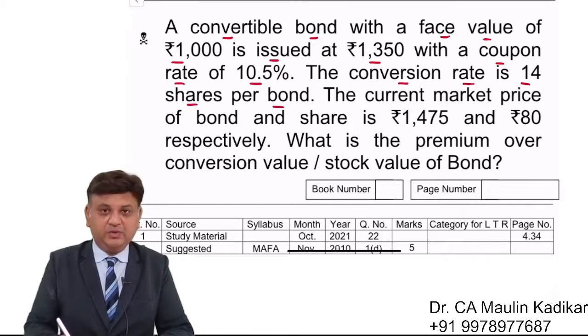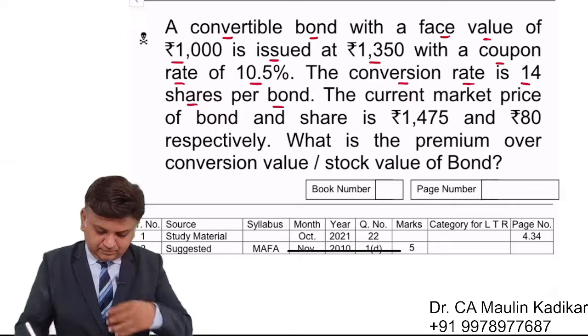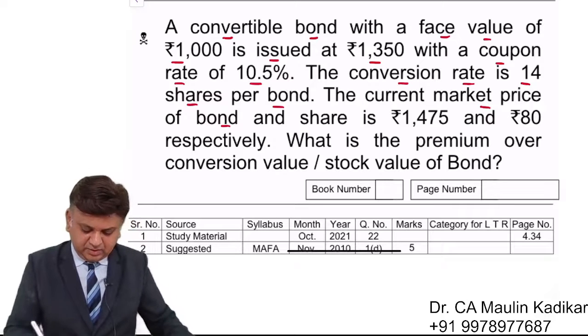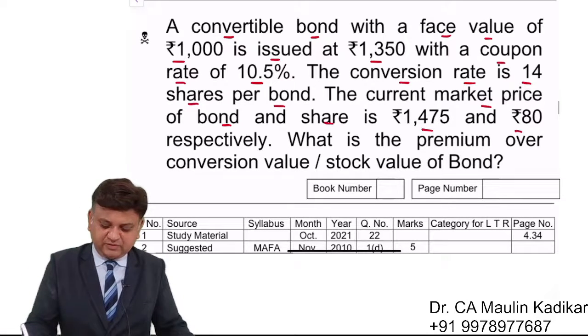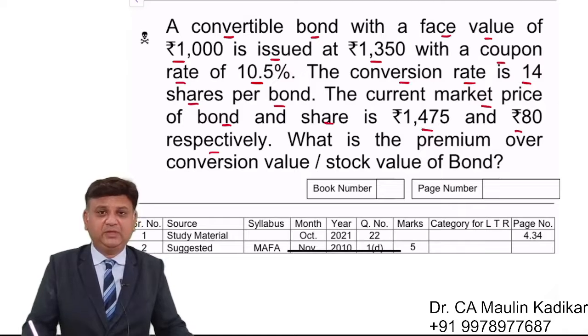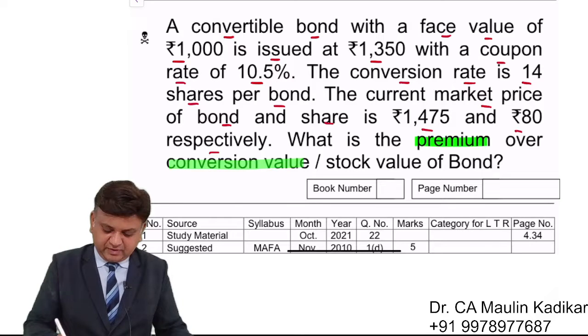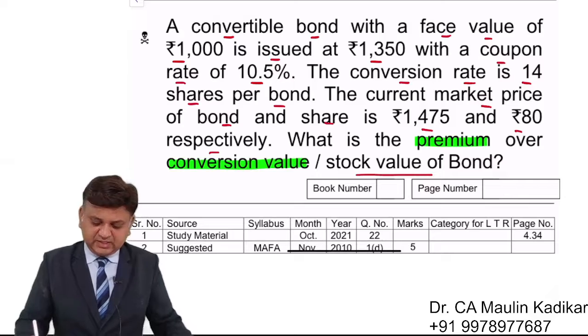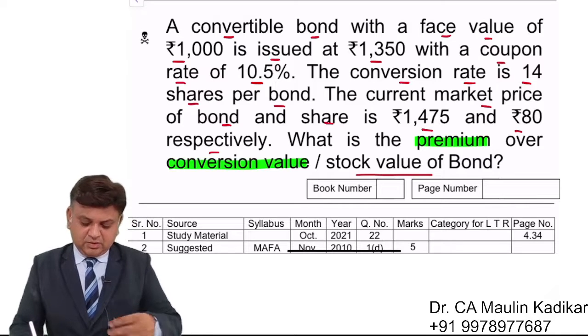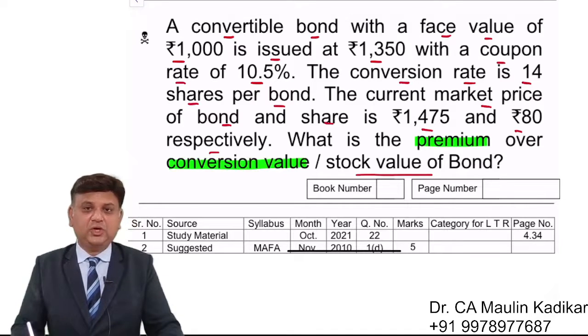Conversion rate is 14 shares per bond. The current market price of the bond and the share price is Rs.1475 and Rs.80 respectively. What is the premium over the conversion value or what is the premium over the stock value of the bond?